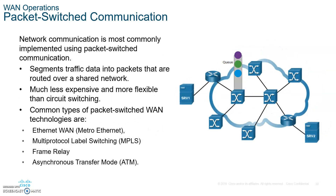Packet switching, on the other hand, is when an ISP allows clients to share the links. Each packet traveling on the network will have labels to differentiate between different clients. It is much less expensive than circuit switching. Examples include Metro Ethernet, MPLS, frame relay, and old ATMs.